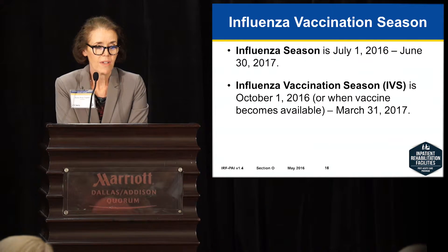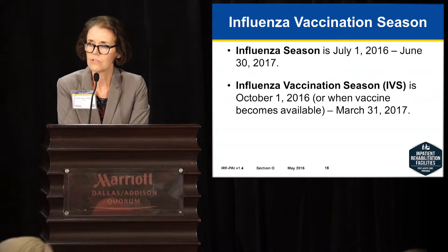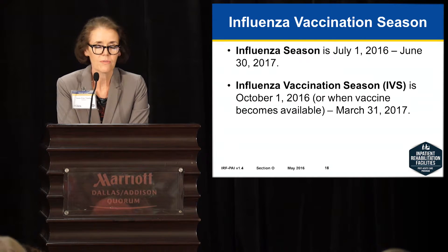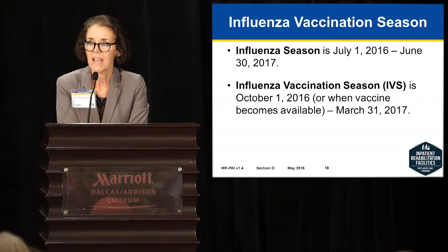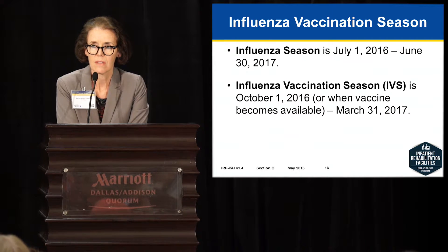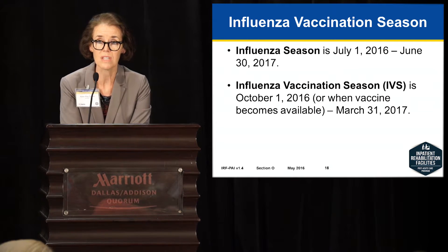The influenza vaccination season, if you look at this slide, runs from July 1st to June 30th — so that's all year. What we define as the influenza vaccination season is typically October 1st through March of the following year. That's when we're going to want to make sure our patients are being vaccinated, but interestingly, the flu season is actually all year long.